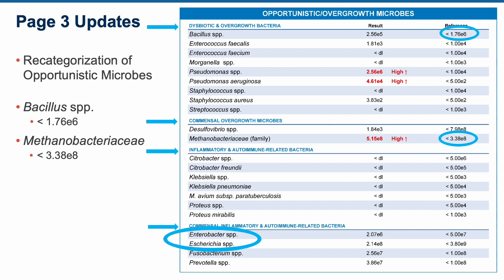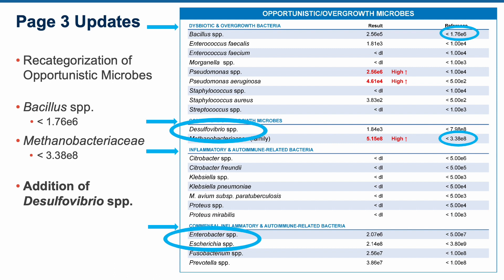Based on lab analysis, reference range changes have been applied to both Bacillus and the Methanobacteriaceae family of microbes. D-sulfovibrio species has been added to the GI Map. Quantifying levels of this sulfate-reducing organism gives deeper insight into gas production through the microbiome, particularly hydrogen sulfide, which can reduce oxidative stress at low levels but pose toxicity at high concentrations.